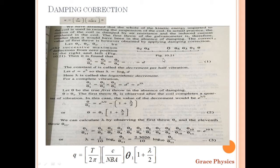Theta1 by theta3 equals (theta1/theta2) × (theta2/theta3), and cancelling theta2, theta1/theta3 = D × D = D squared. That is the complete vibration decrement: D squared. Since D = e^λ, we get D squared = e raised to 2λ.